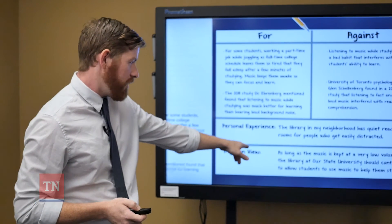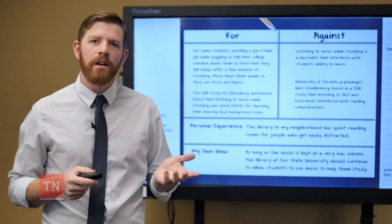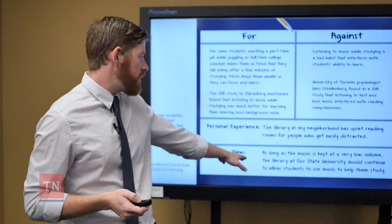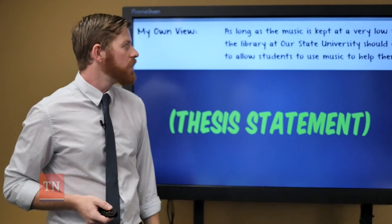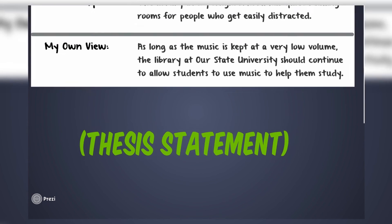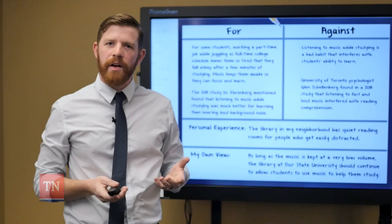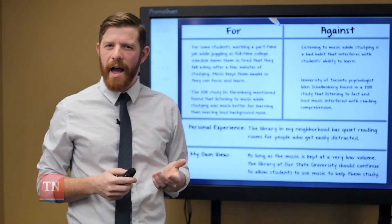The last thing we want to write is one sentence that briefly sums up our own view on the subject. My personal view is that as long as music is kept at a very low volume, the library at our state university should continue to allow students to listen to music to help them study. That one view actually sums up my thoughts, and this is called a thesis statement. This one sentence will work into the introduction paragraph of our essay so the reader knows exactly what our view is on the subject. Now that we have everything written down, we have a really good road map to write our essay and can refer back to it to make sure we hit all the points we need to hit.